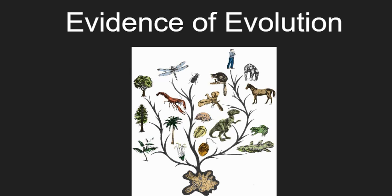We saw that he talked about natural selection, artificial selection, and what are the factors that contributed to the evolution, such as environmental factors, genes, and mutations.